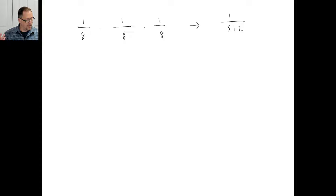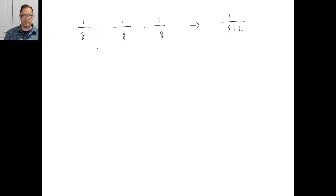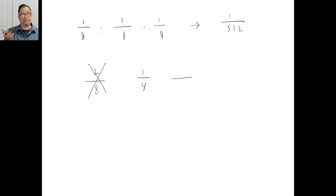Now try part B. The spinner is spun twice. What's the probability it'll stop on either three or five the first time, and then stop on a two the second time? The favorable outcomes for the first spin are three and five — that's two out of eight, which reduces to one-fourth. The probability of stopping on two the second spin is one out of eight. So the total probability is one-fourth times one-eighth, which equals one out of thirty-two.